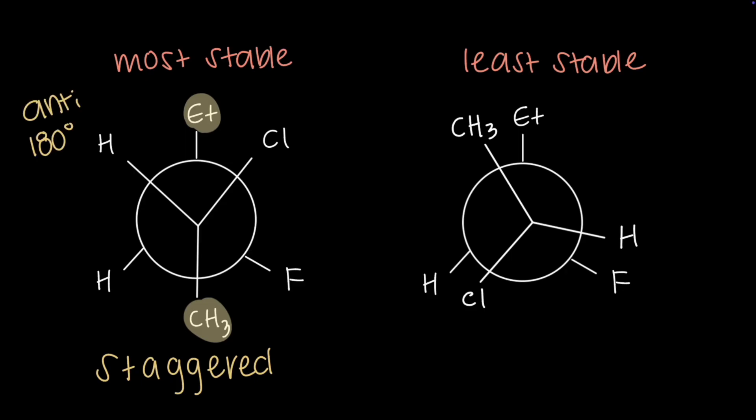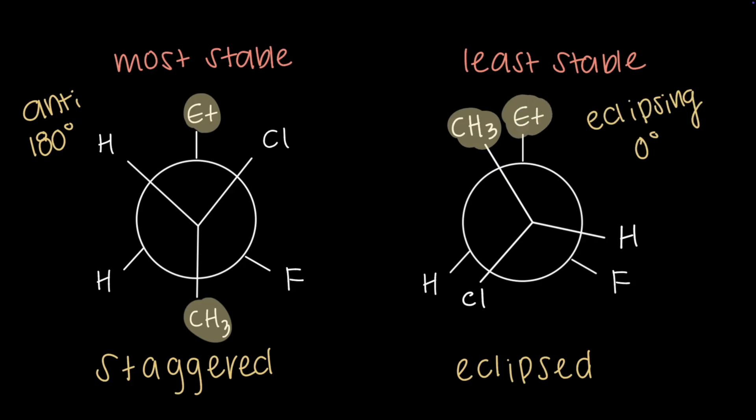The least stable will always be in an eclipsed conformation where the largest groups are lined up directly with each other.